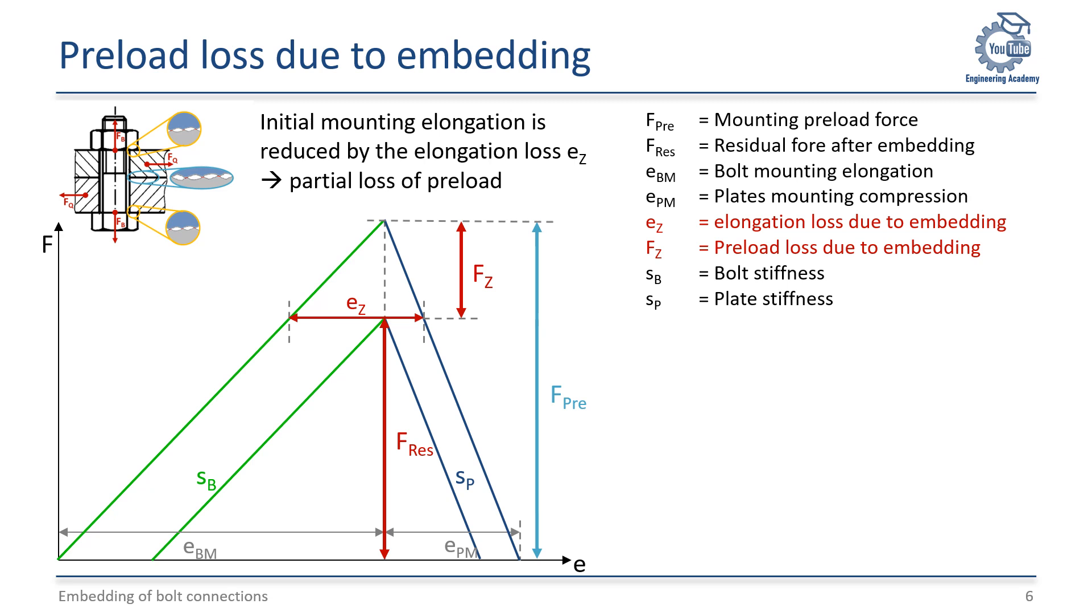Since the macroscopic stiffness SB of the bolt and SP of the plates do not change due to embedding, the two triangles shown here are similar. Using the similarity, we can calculate the preload loss due to embedding.